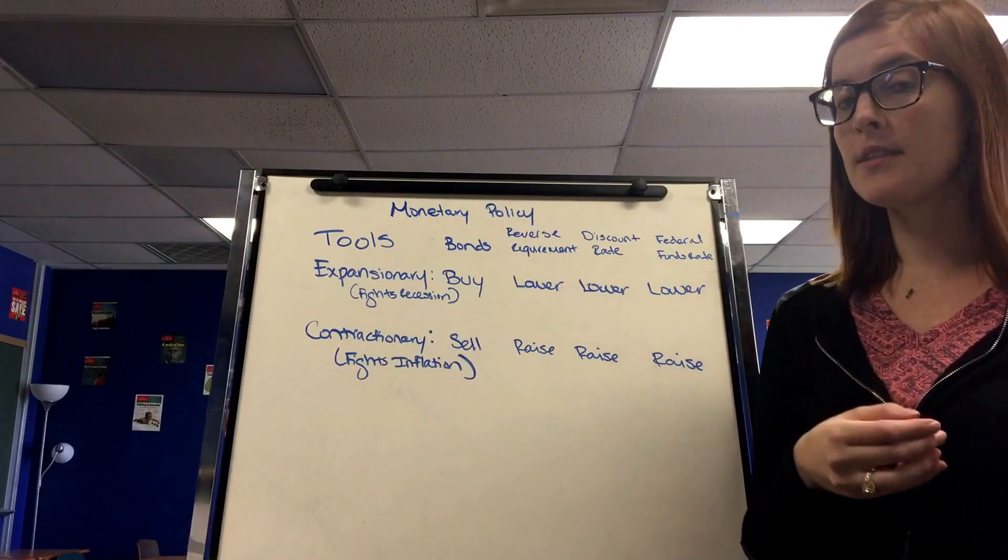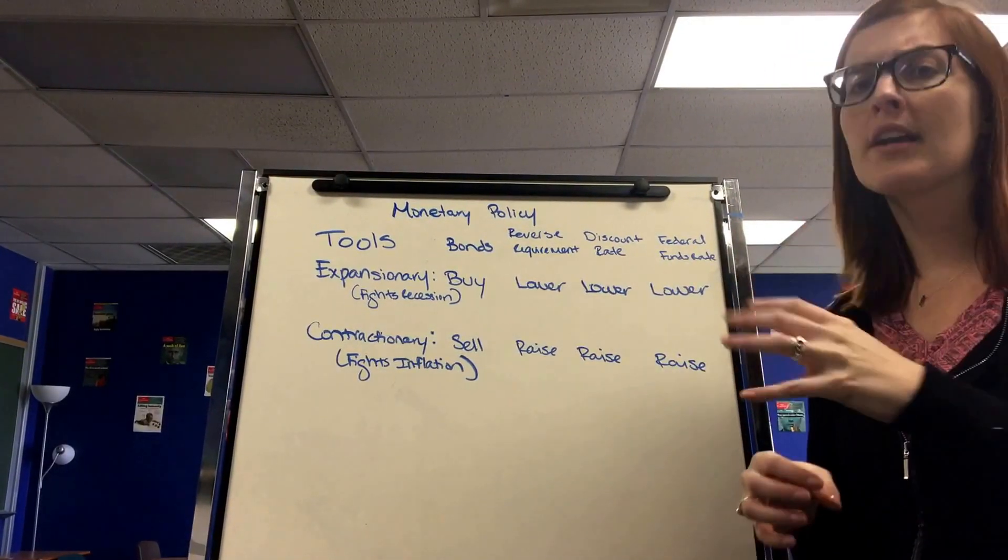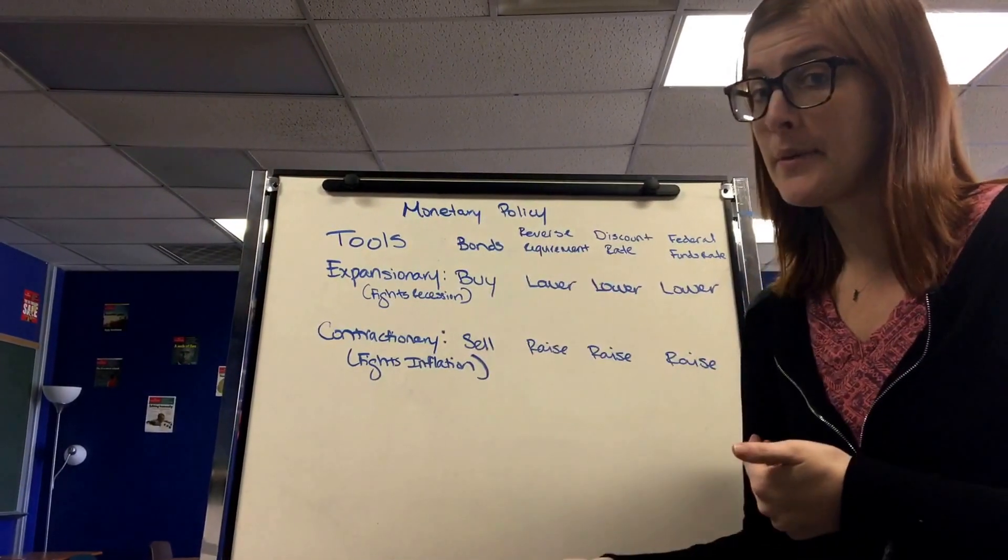M2 money includes M1 money, but also small time assets. So like stocks, bonds, credit cards, things that you can liquidate, but it's not as easy to liquidate as M1 money.